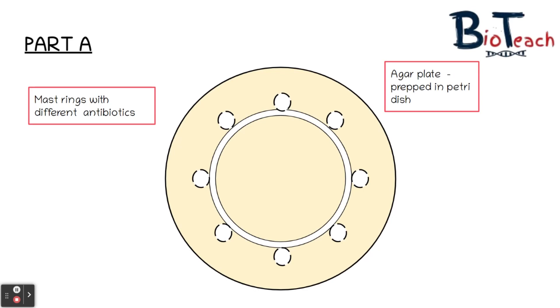When you prepare your lawn culture, you will place your mast ring onto the lawn culture and incubate it, and therefore be able to see whether there are any zones of inhibition on that plate.